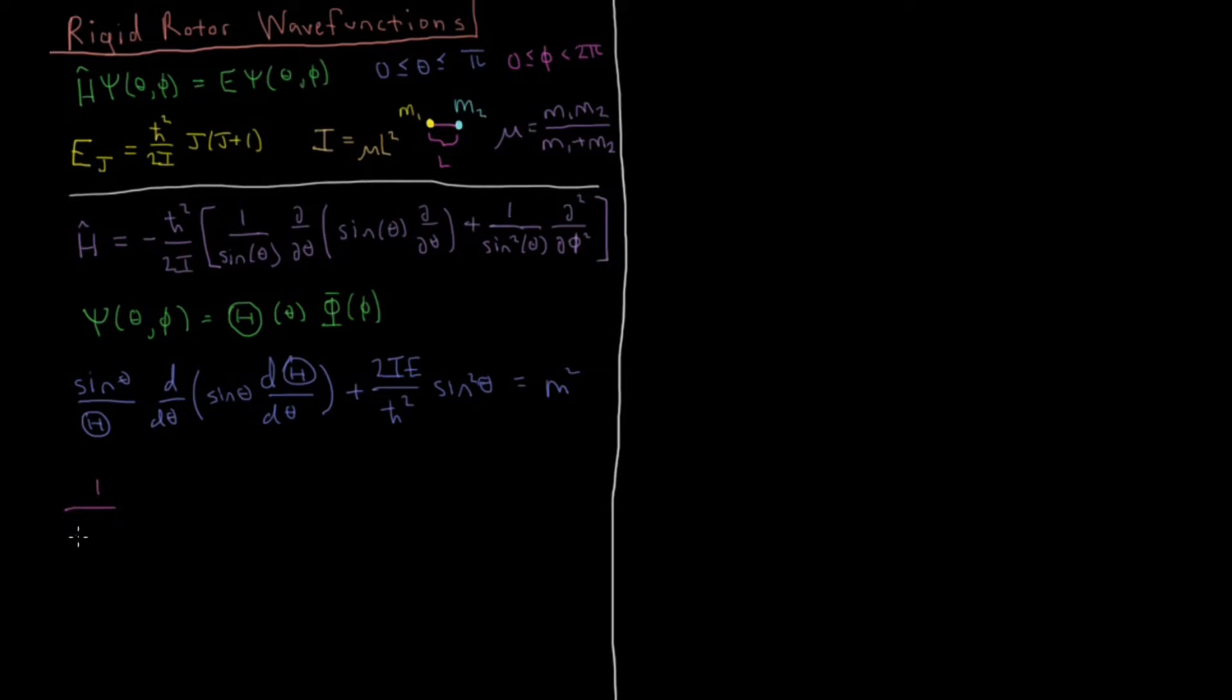And we also have for phi, 1 over phi, the function of phi, times the second derivative of phi with respect to the variable phi is equal to minus that same function there. So separation of variables gave us this result, that these both have to be equal to the same constant, and then we'll solve these individually.